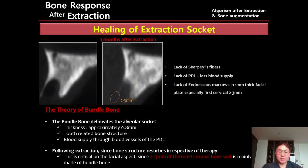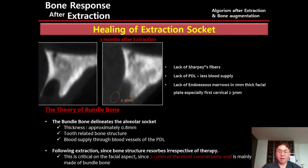Have you ever heard about the bundle bone theory? Bundle bone is a tooth-delineating cortical bone. The thickness of this bundle bone is around 1.0 mm — exactly 0.8 mm. The main blood supply to this bundle bone comes from the periodontal ligament.